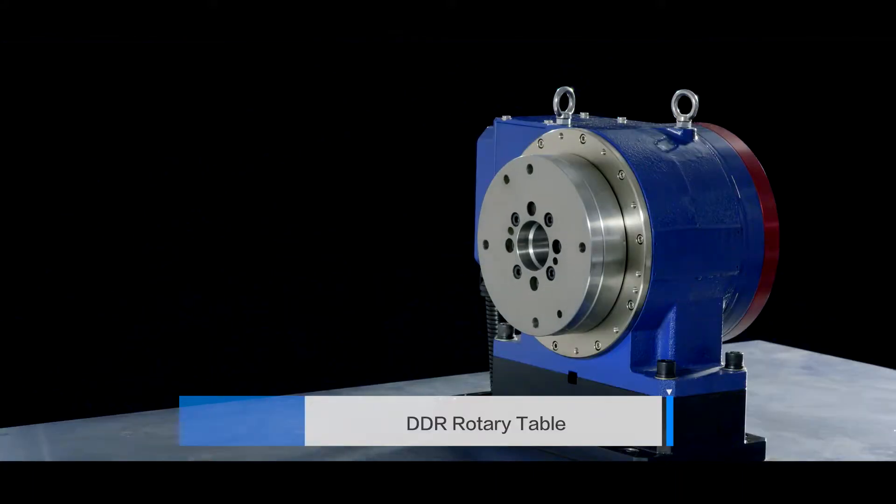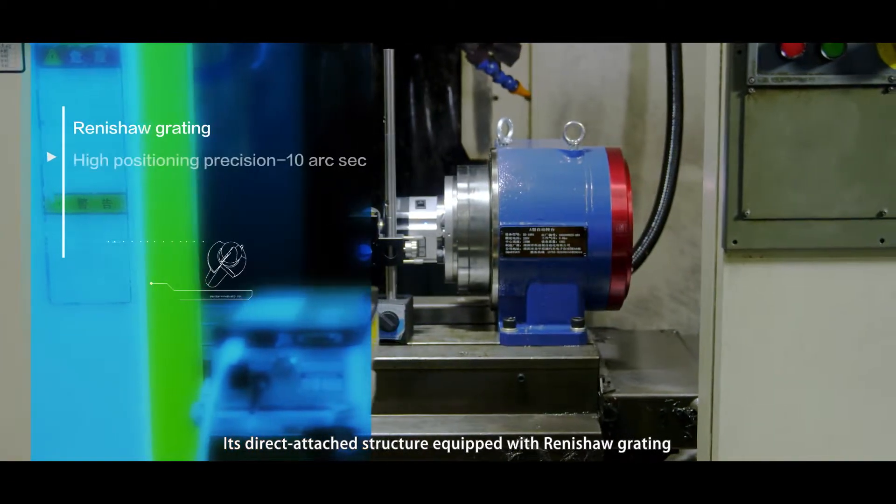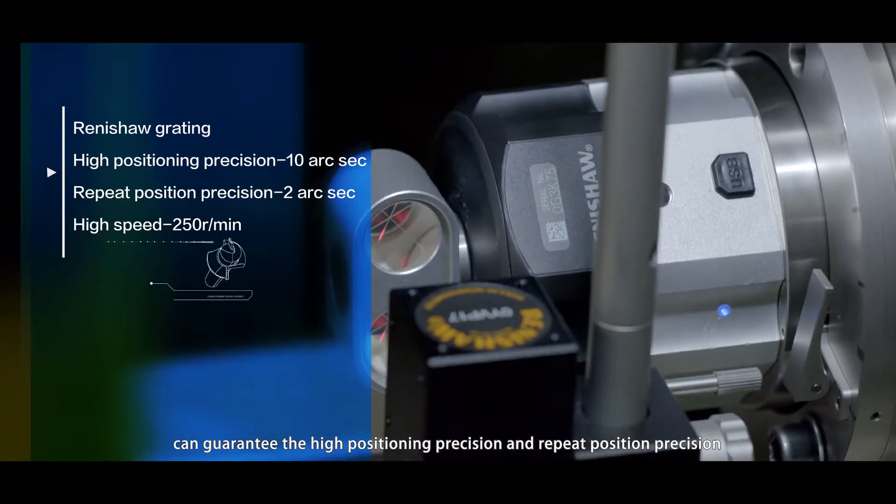DDR rotary table: Its direct attached structure, equipped with Renishaw grating, guarantees high positioning precision and repeat position precision.